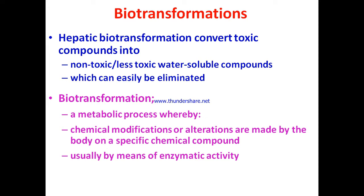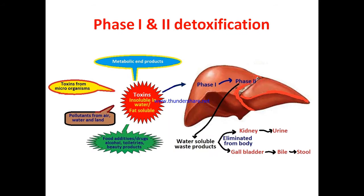This is a schematic representation of the phase one and phase two detoxification process. Toxins entering or produced in the body are insoluble in water, or fat-soluble. These toxins may be metabolic end products, toxins from microorganisms, pollutants from air, water and land, or food additives, drugs, alcohol, toiletries, and beauty products.